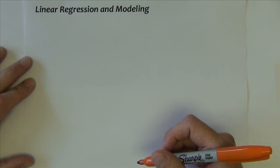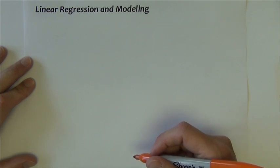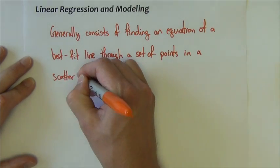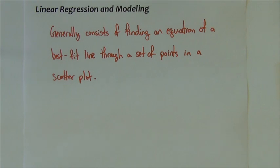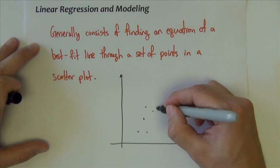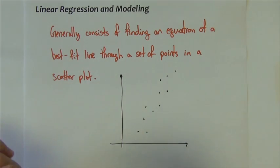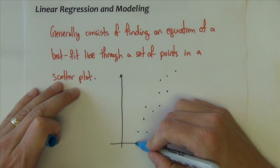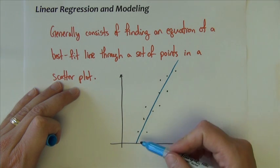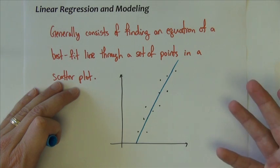Continuing with linear functions, let's talk about linear regression. Linear regression is basically the process of finding an equation of a best-fit line through a set of points on a scatter plot. We plot some points, see that they cluster around a line, and find the equation of that best-fit line to predict values for the data set.